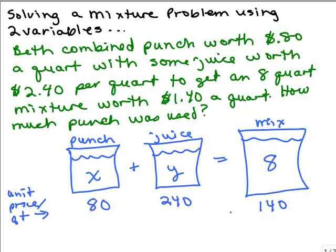So remember, you don't add the two prices together. The mixture's got to be somewhere in the middle, right? Some number between 80 and 240, so that's why it's 140.